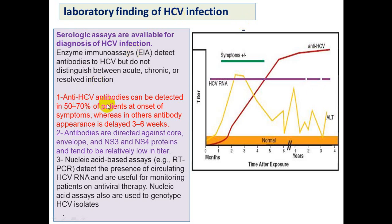Serological techniques can also diagnose hepatitis C virus infection. Anti-hepatitis C virus antibodies can be detected in 50 to 70% of patients at onset of symptoms, meaning the sensitivity of this test is about 50 to 70%. Other antibodies appear delayed, three to six weeks after infection.